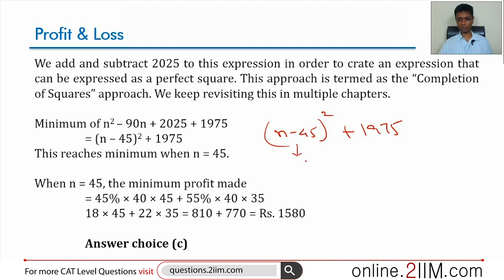When will this be minimum? This is a square, always positive or never negative. It will be minimum when n is 45. This part goes to zero, so the minimum profit is 1975... wait, no, let me recalculate.